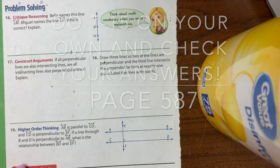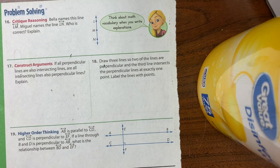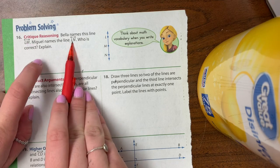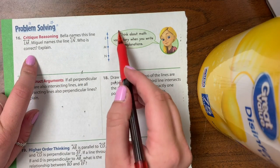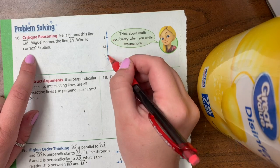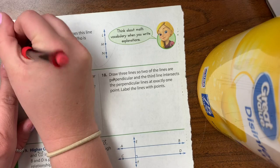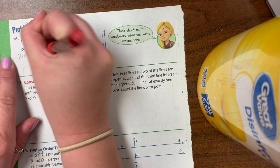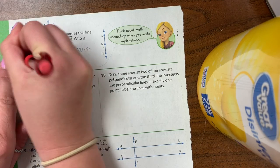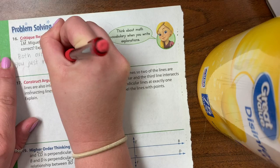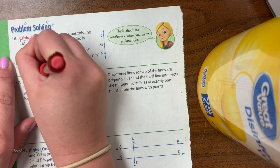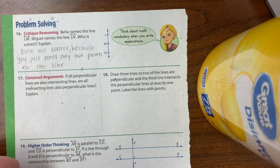So on page 588, I'm only going to go over a few of them. But you're supposed to try all of them and then check your own answers. So I'm going to start with 16. It says, Bella names this line, line LM. And Miguel names it line LN. Who is correct? And explain. Well, if you look on your line over here, it has all three points. So both of them are correct because you can name it by any two points that are on that line.